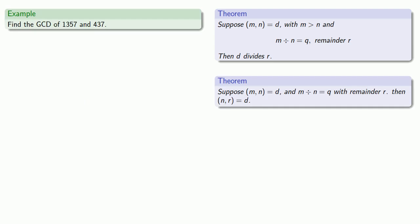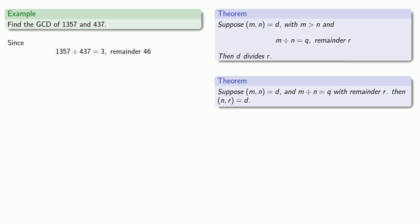This makes it easier to find the greatest common divisor of any two numbers. So let's find the greatest common divisor of 1357 and 437. We'll divide the larger by the smaller: 1357 divided by 437 is 3 with remainder 46. Our theorem says that if the greatest common divisor of 1357 and 437 is D, then the greatest common divisor of 437 and 46 is going to be D as well.